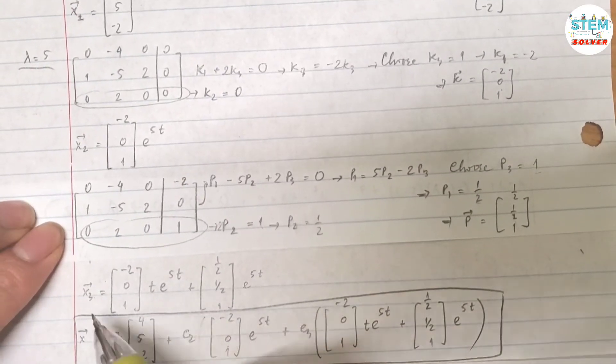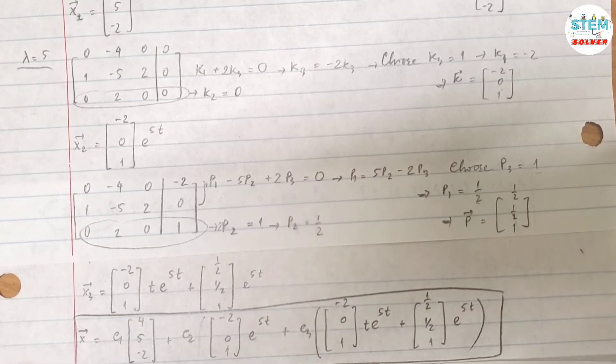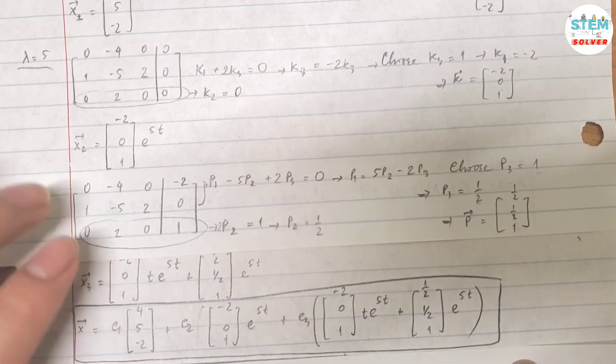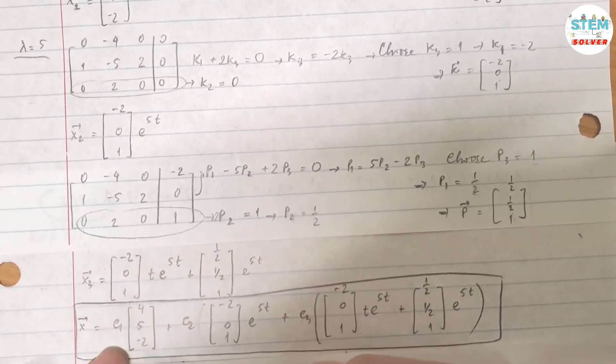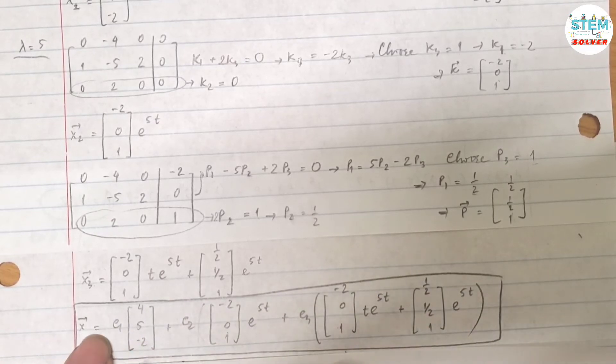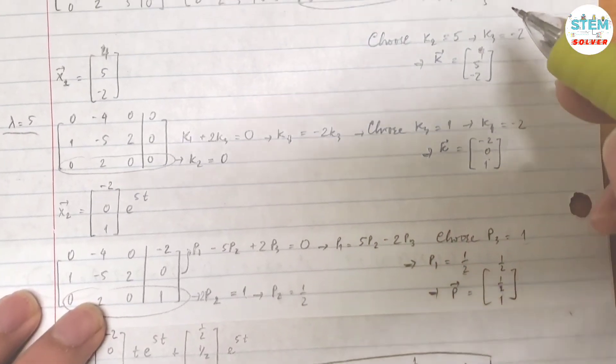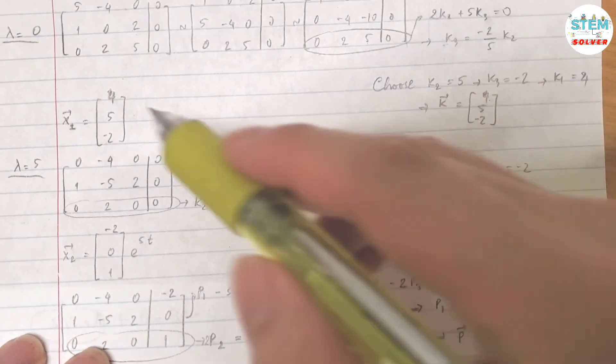So your x3 is going to be, so since you have repeated eigenvalues and distinguished eigenvalue, your final answer will be a combination of those two. So let's take a look at the first one. When you have lambda equals 0, then your final answer is equal to C1 times vector eigenvector for that lambda.